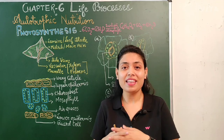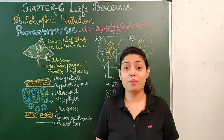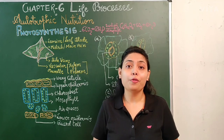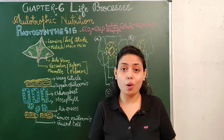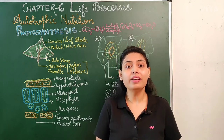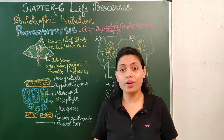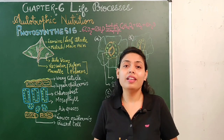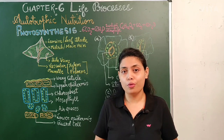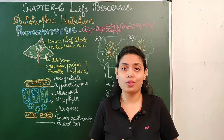Good morning students, and welcome back to another class of Life Processes. This time we will study about photosynthesis under the topic of autotrophic nutrition. In an earlier class I told you who are known as autotrophs — living organisms who can prepare their own food or can nourish themselves are known as autotrophs.